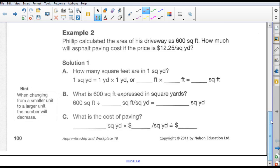Example number 2. Philip calculated the area of his driveway is 600 square feet. So now we're going to be talking about imperial measurements. How much will asphalt paving cost if the price is $12.25 per square yard? So the first thing we need to do, since the pricing is in square yards, we have to convert 600 square feet to square yards. How do we do that? Well, how many square feet are in one square yard?